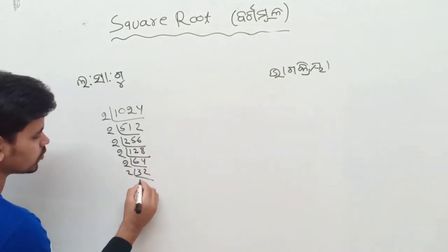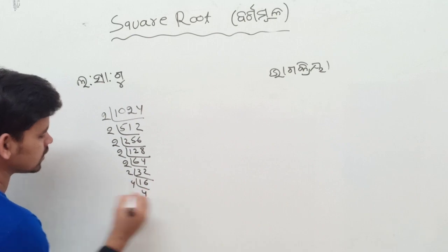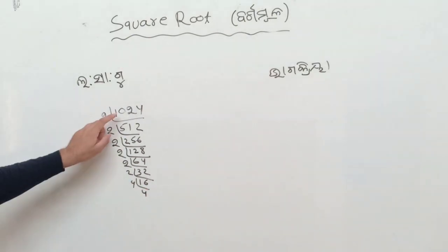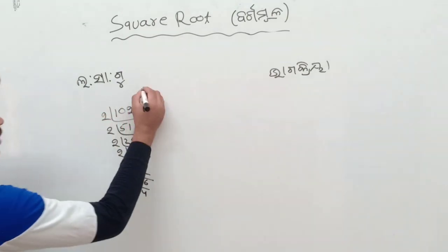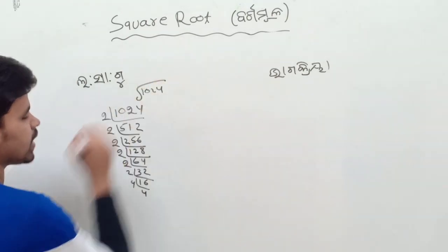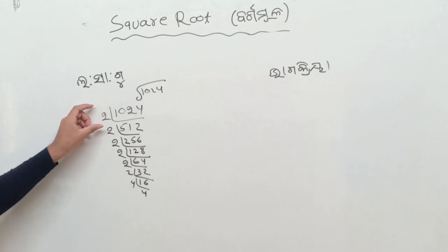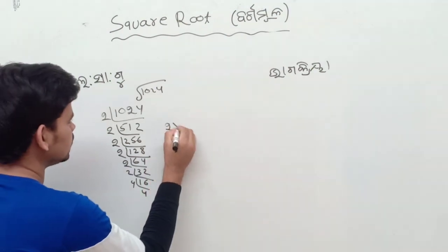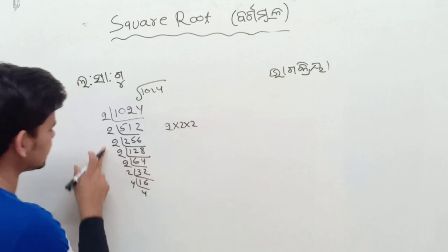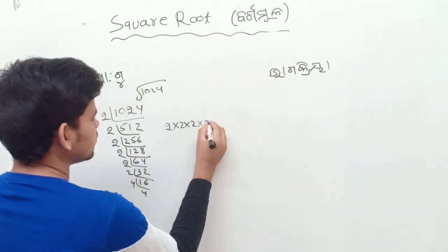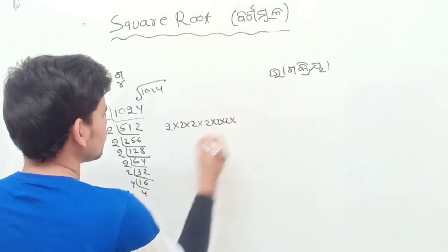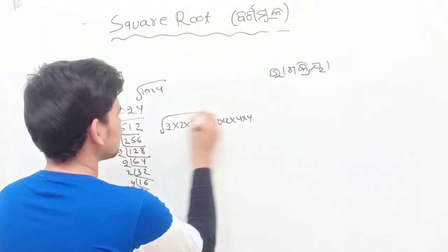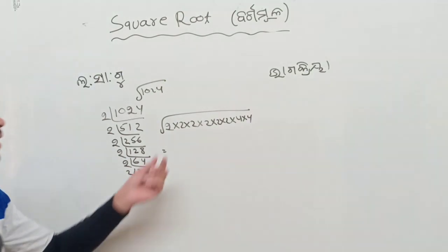Then 2, 2, 2, 2, 2. Then 2, 3. Then 2, 3, 2, 2, 2, 1, 2, 3, 2, 2, 2.